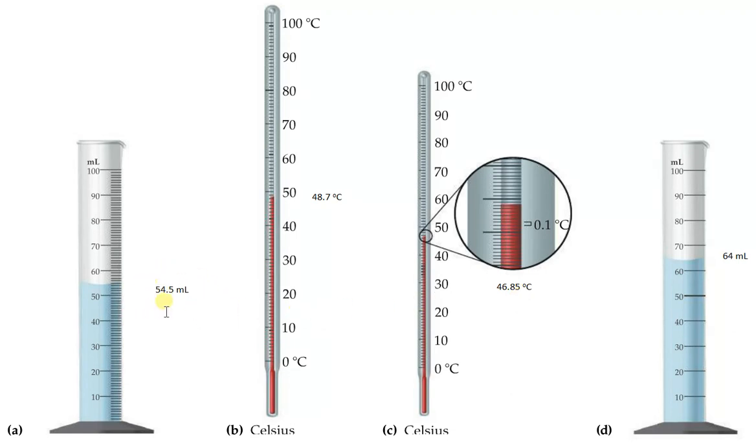This first measurement has three sig figs. The second measurement has three sig figs. The third measurement has four sig figs. The fourth measurement has two sig figs. And every one of them has only one uncertain digit, because that's the one you have to estimate.